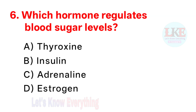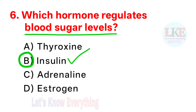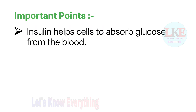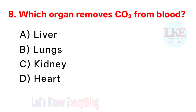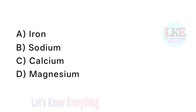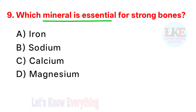Question number 6: which hormone regulates blood sugar levels? Right answer option B: insulin. Insulin helps cells to absorb glucose from the blood. Question number 7: which organ produces insulin? Right answer option D: pancreas. Question number 8: which organ removes carbon dioxide from blood? Right answer option B: lungs. Question number 9: which mineral is essential for strong bones? Right answer option C: calcium.